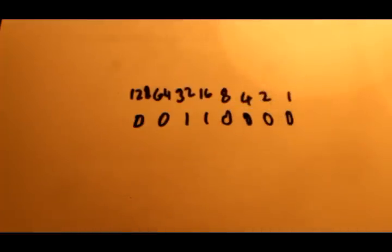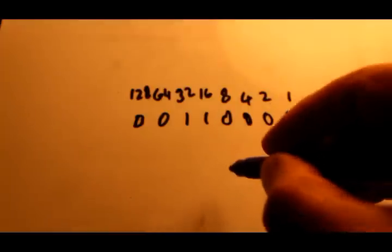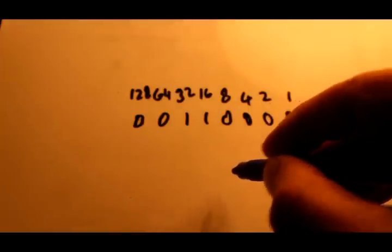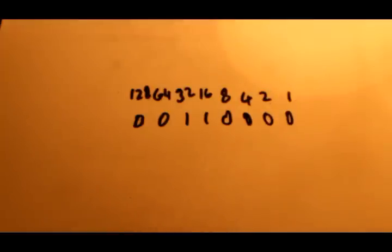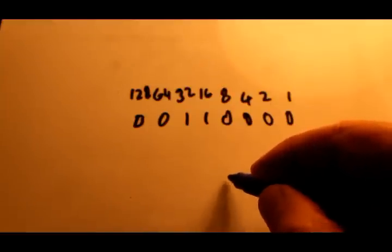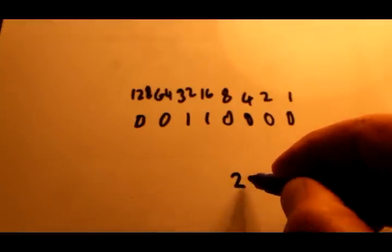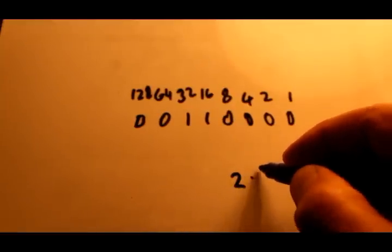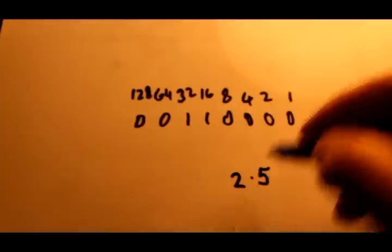The problem with normal binary is when we are trying to deal with floating-point numbers. Usually floating-point numbers are 32-bit for single precision and 64-bit for double precision, but we're going to just use 8-bit numbers so that you get the general idea.